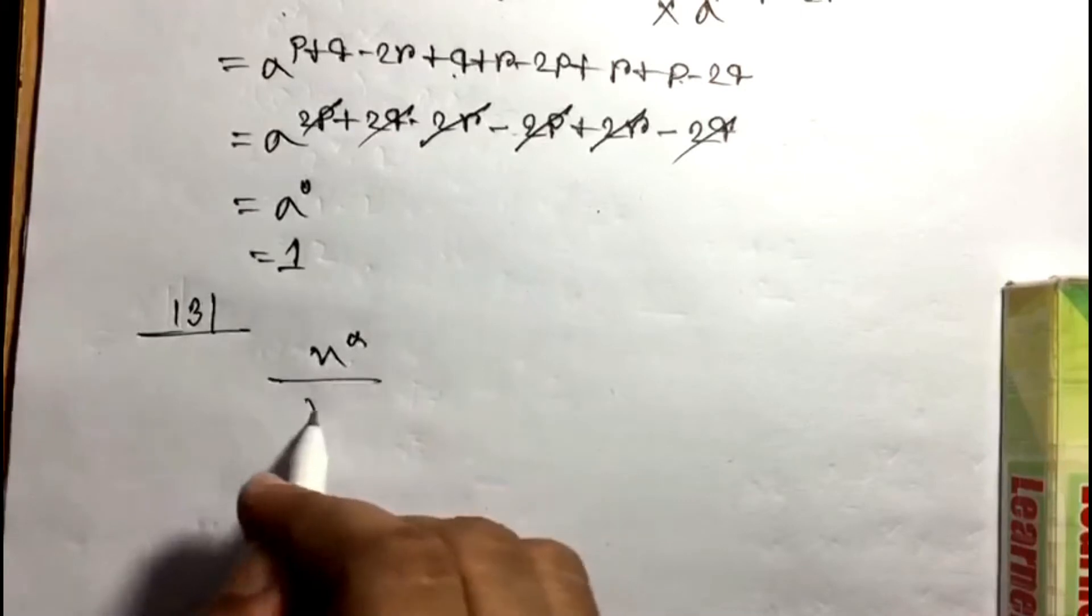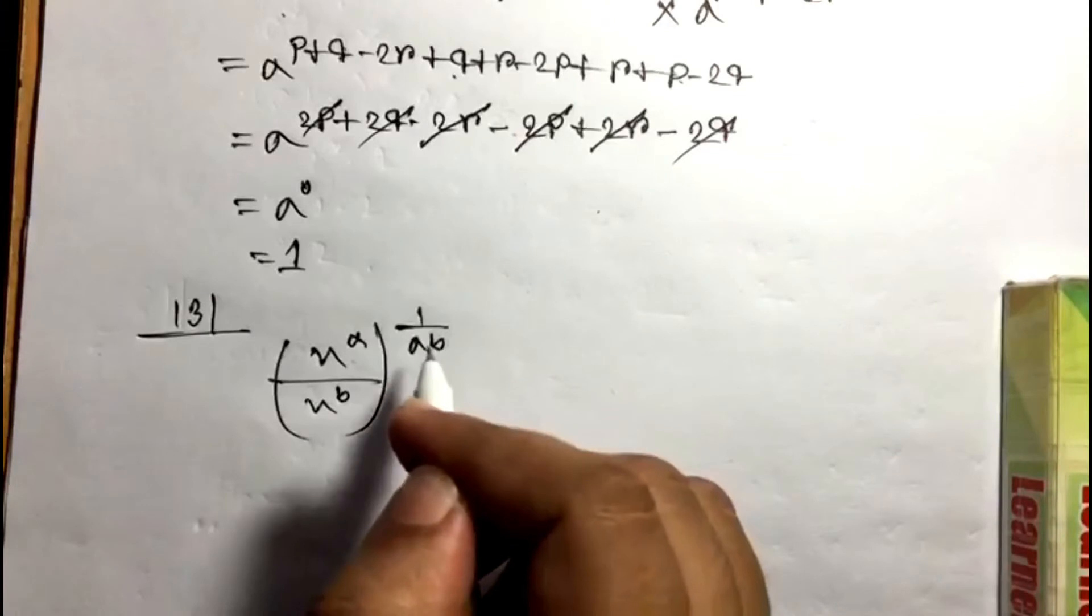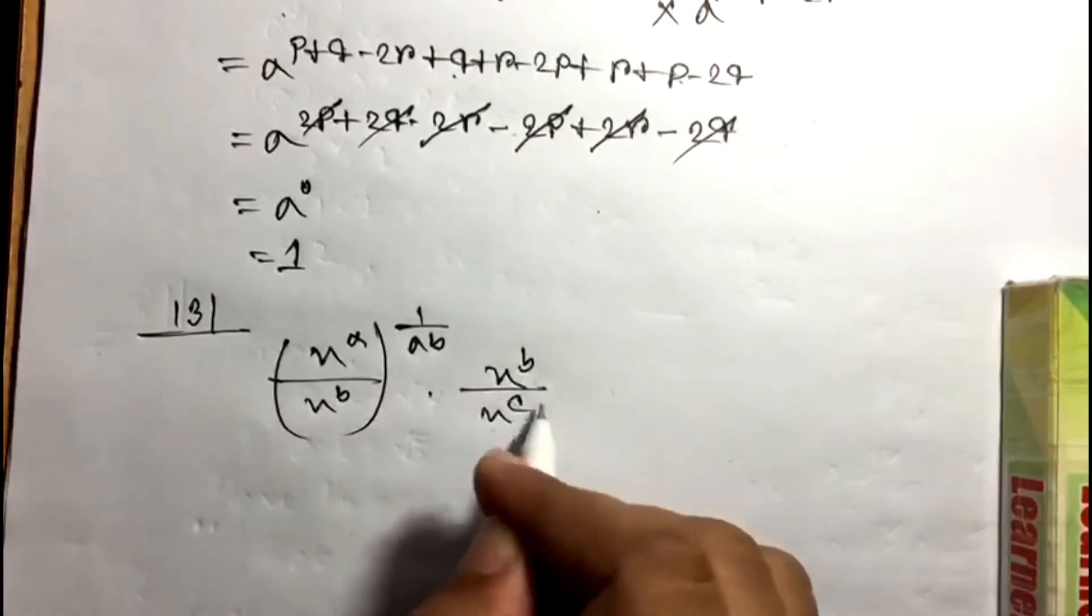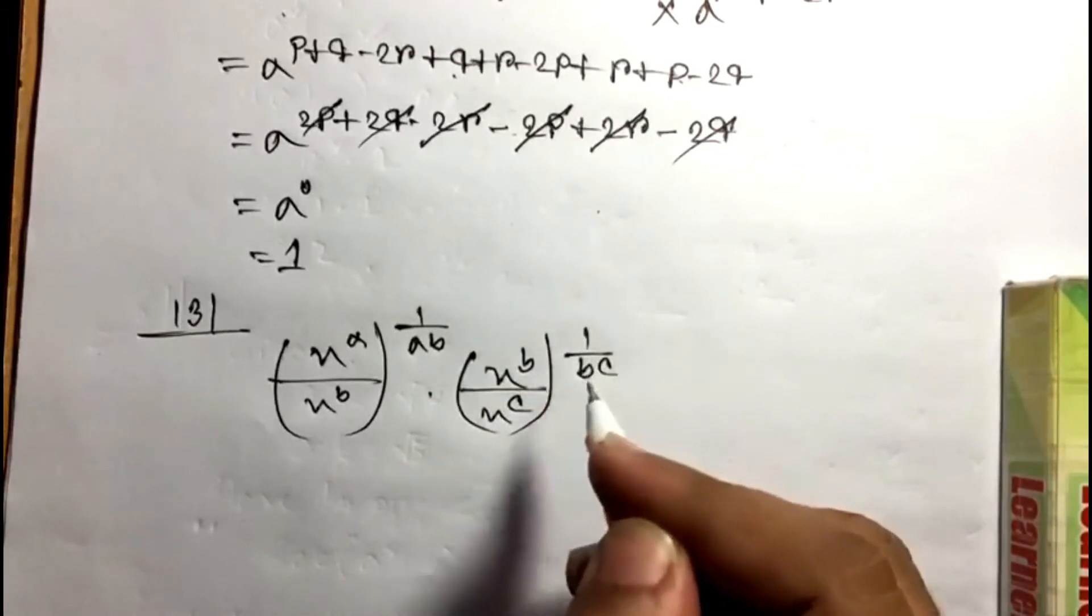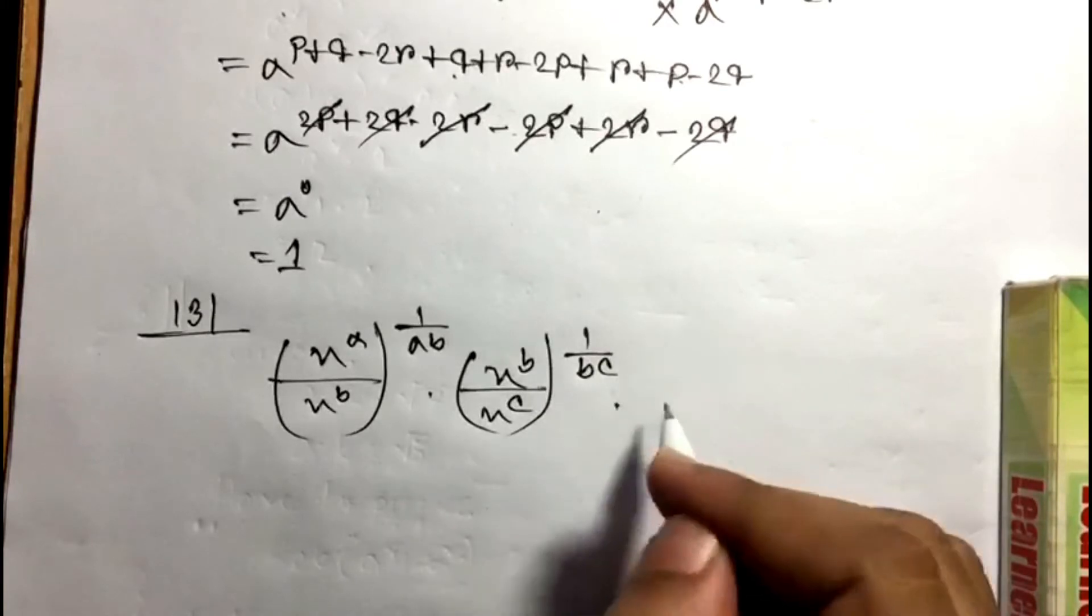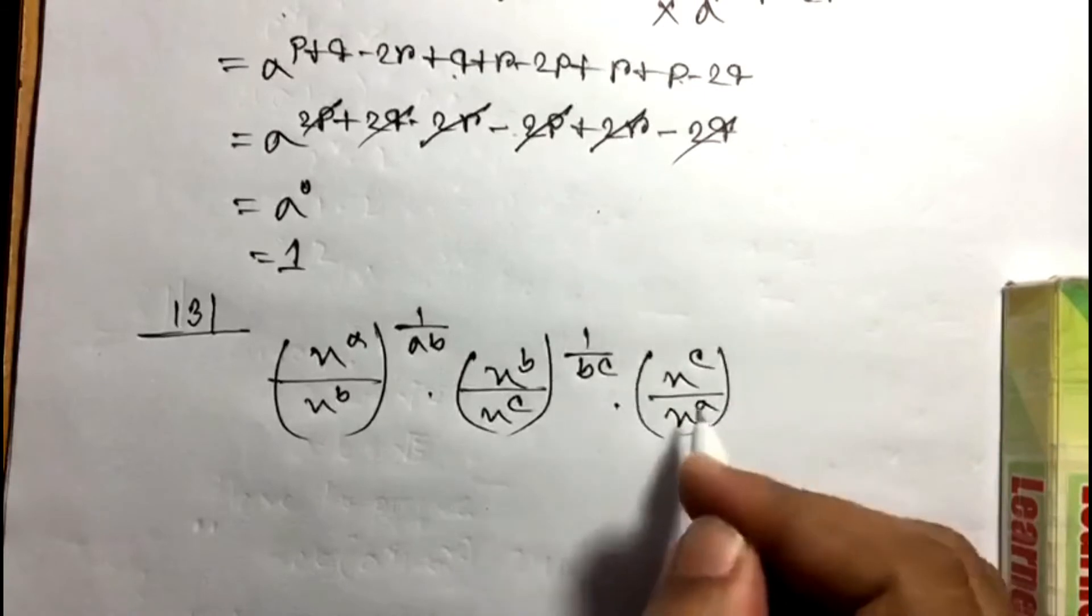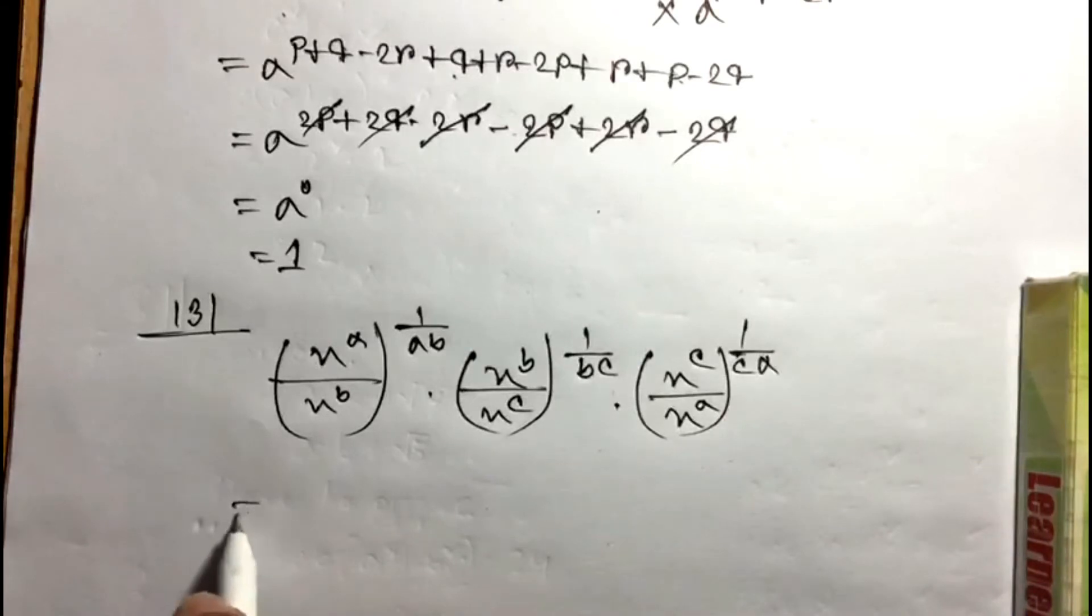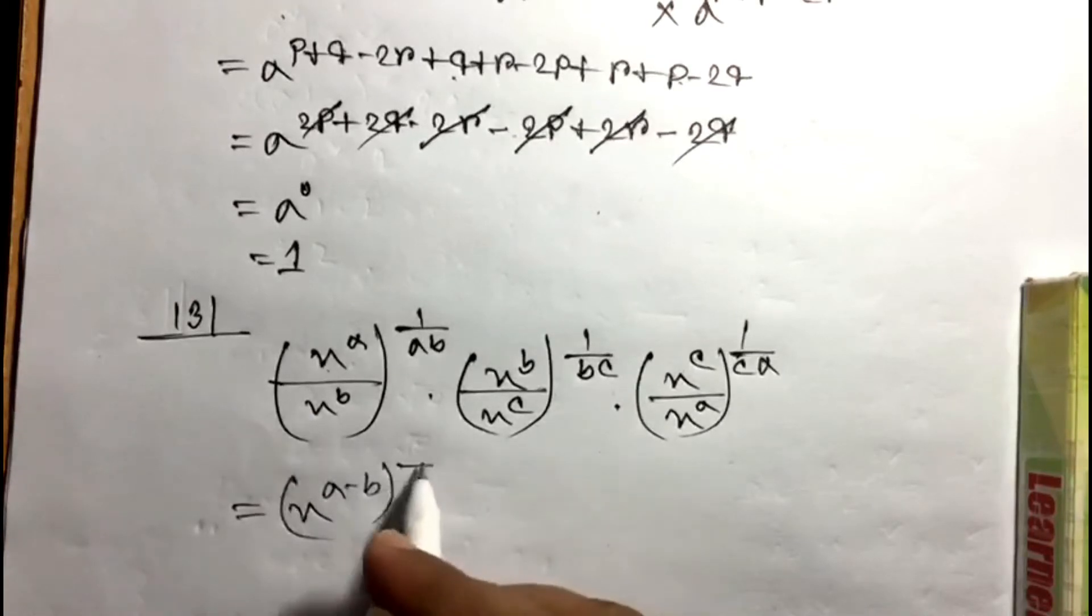x to the power b, x to the power c, x to the power c, x to the power a, or one by ca. I can keep it again, I'm back on the record: x it can be x.